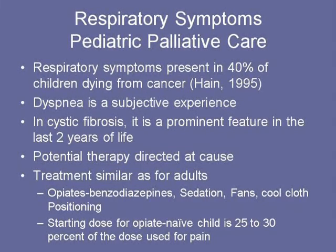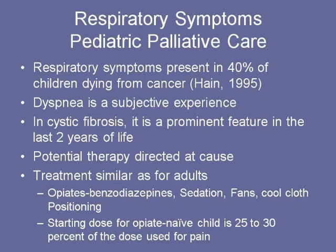Respiratory symptoms are present in about 40% of children dying from cancer. Dyspnea is a subjective experience — it has nothing to do with PCO2 or other measurable values. In cystic fibrosis, it's a prominent feature in the last few years of life. Treatment is directed at the cause and is similar to adults: opiates, benzodiazepines, cool cloths, and positioning. The starting dose for dyspnea in an opiate-naive child is 25 to 30% of the dose used for pain — you need less opiate for dyspnea than for pain. The American Academy of Thoracic Surgeons recommends 40% of the starting pain dose.